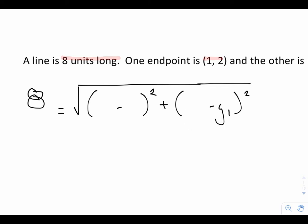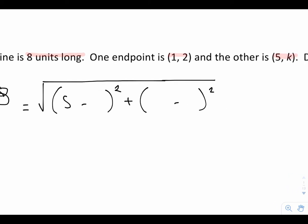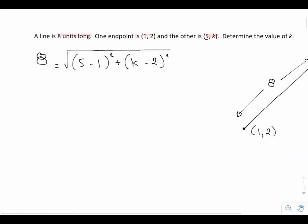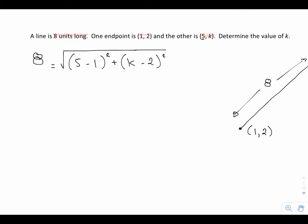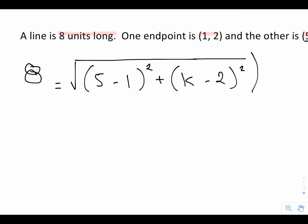So let's plug in the values. I'm going to replace x2 with 5, my x1 with 1. k will be my y2 value, minus 2 will be my y1 value. First things first, let me start by getting rid of this square root sign by squaring both sides. So the 8 squared becomes 64, and on my right-hand side, the square root disappears. What I'm left with is 5 minus 1 squared, that is 4 squared, plus k minus 2, and that's all squared as well.